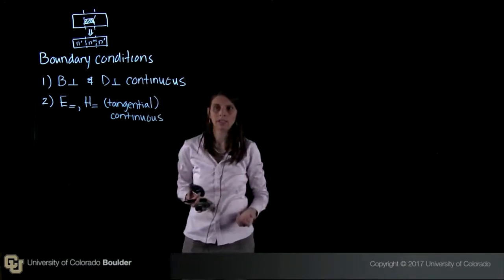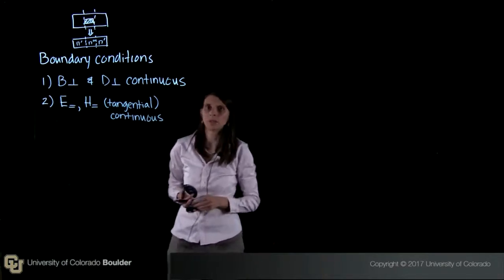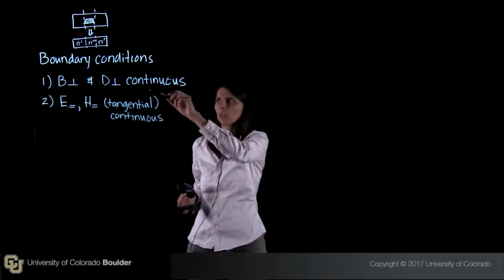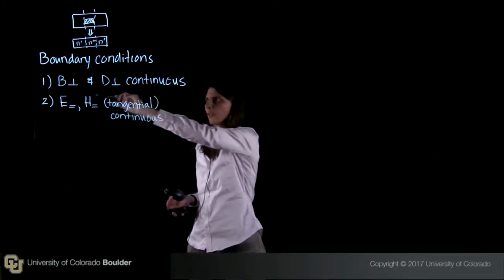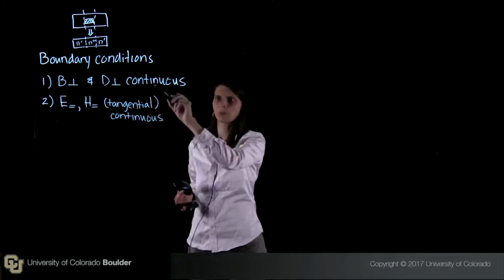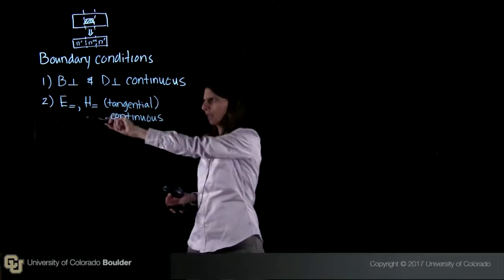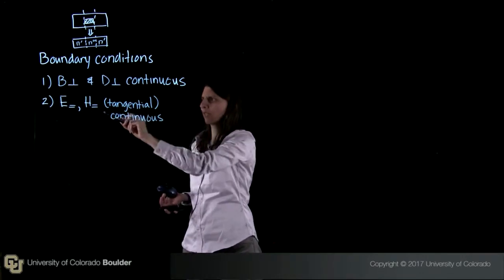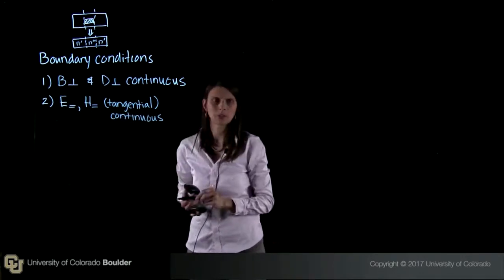So how do we go ahead and actually do this? We start by applying Maxwell's equations and specifically the boundary conditions. The boundary conditions we'll apply are that the perpendicular component of the magnetic flux and the electric displacement are continuous. The second thing is that the tangential components of the electric field and the magnetic field are also continuous.